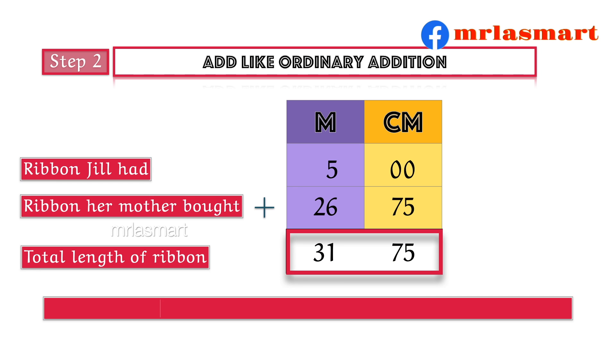Hence, 5 meters plus 26 meters 75 centimeters equals 31 meters 75 centimeters.